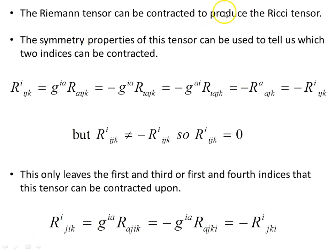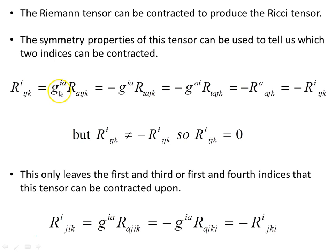The Riemann tensor can be contracted to produce the Ricci tensor. The symmetry properties tell us which two indices can be contracted. If we look at R_IIJK and multiply by the inverse metric to raise the first index, this is just another way of writing the contraction on those indices.